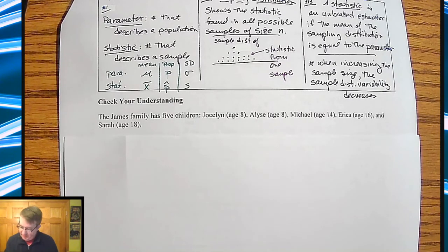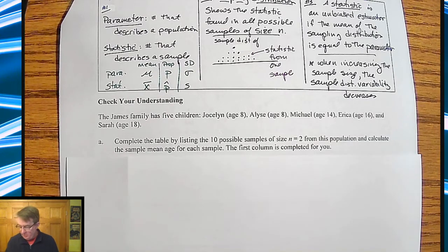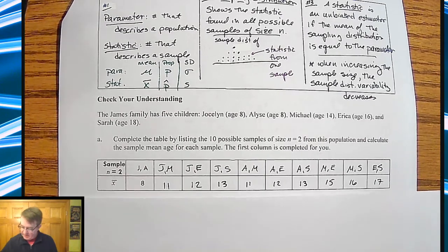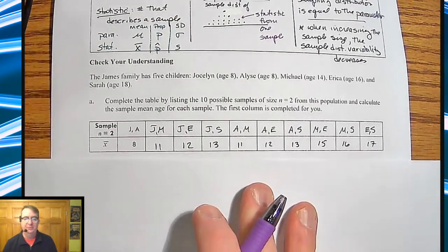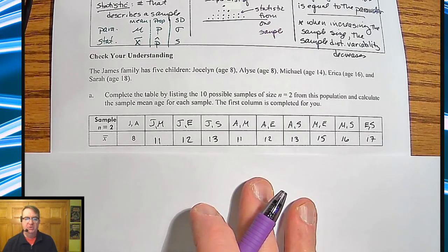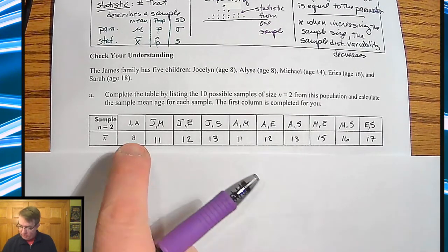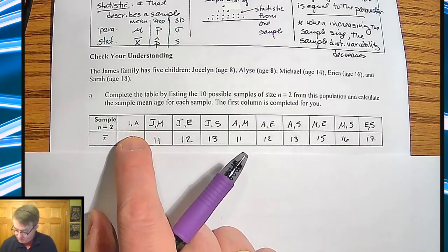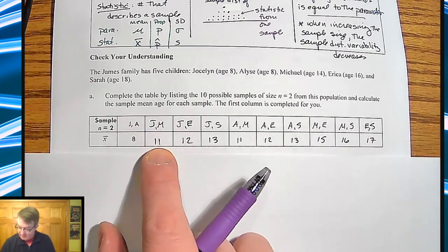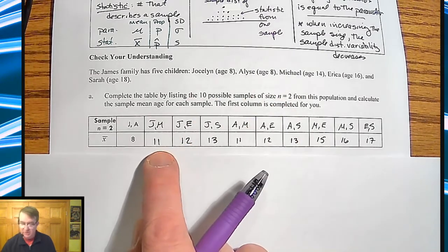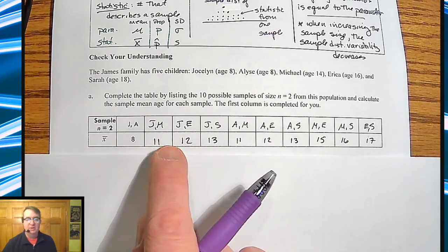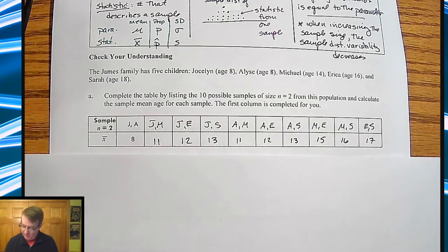All right. So these James family has Jocelyn and Elise and Michael and Erica and Sarah, ages 8, 8, 14, 16, and 18 respectively. And so we give you a table and ask you to find the sample average of their means. So you're going to go through here. So we've got Jocelyn and Alyssa, Jocelyn and Michael, Jocelyn and Erica, et cetera. So we added up their ages divided by two. So we get 11, 12, 13, 11, 12, 13, 15, 16, 17.